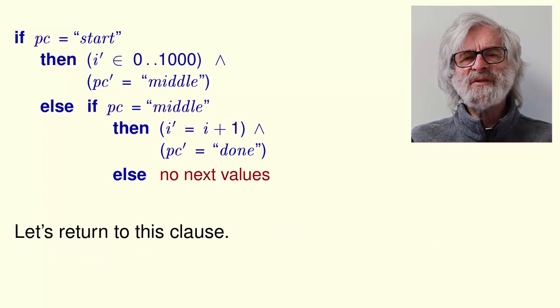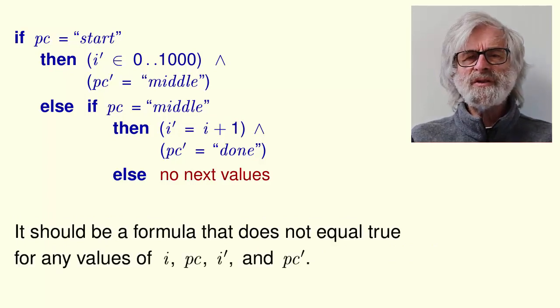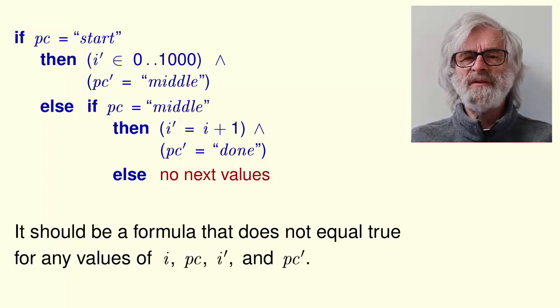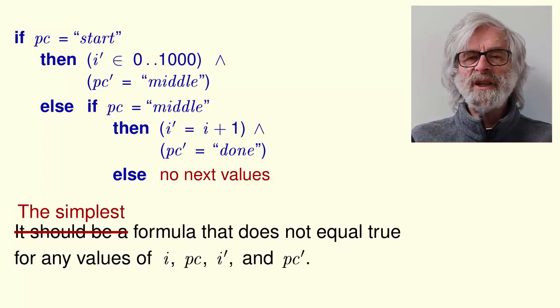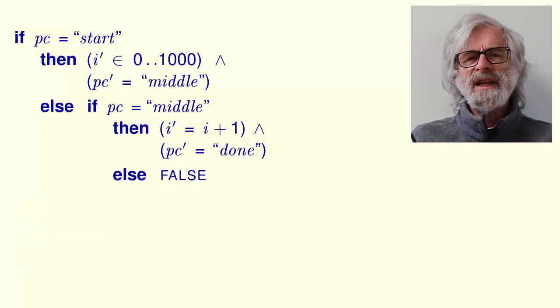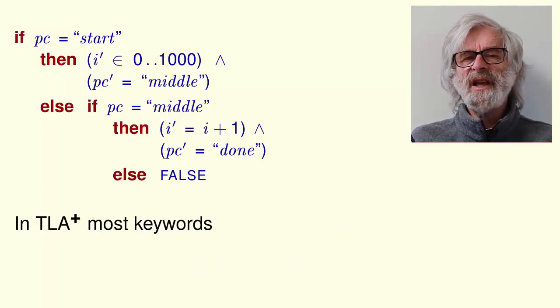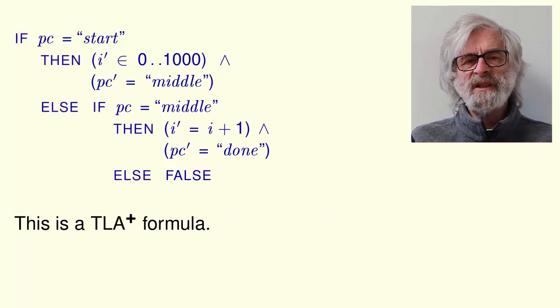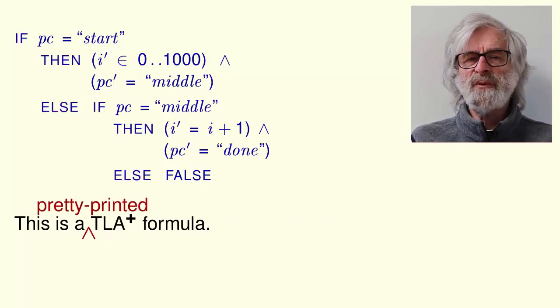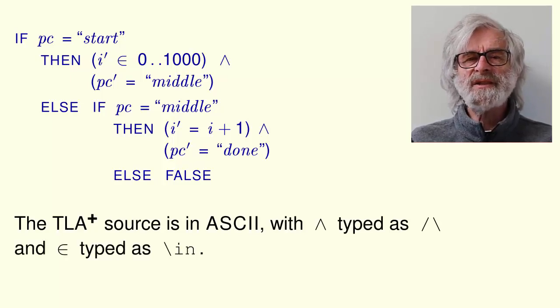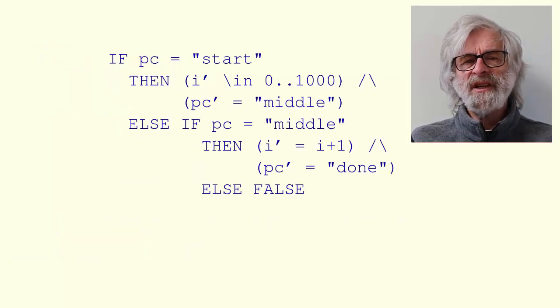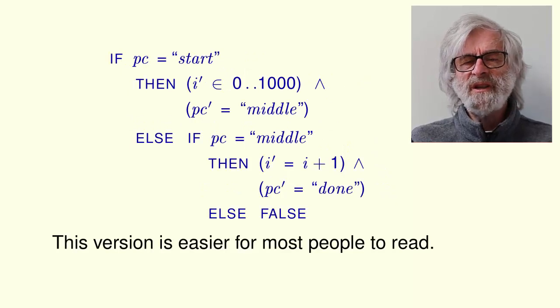Now let's return to the no next values clause. This clause should be a formula that does not equal true for any values of i, PC, i prime, and PC prime. Let's use the simplest such formula, which is one that always equals false. Namely, the formula false. In TLA plus, most keywords are in uppercase letters. This is now a TLA plus formula. That is, a pretty printed TLA plus formula. The TLA plus source is in ASCII with AND typed as a forward slash back slash and the element of symbol typed like this. This is what it looks like in ASCII. This version is easier for most people to read. I'll use it for now.